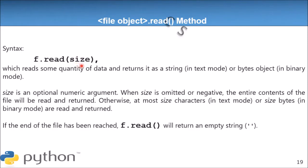If you don't give the size, by default it takes a negative argument and reads the whole content of the file. The size means the number of characters to be returned by the read method. In binary mode, it means the total number of bytes to read. For example, if you write f.read(24), starting from where the file pointer is, it reads 24 characters and returns them to you.